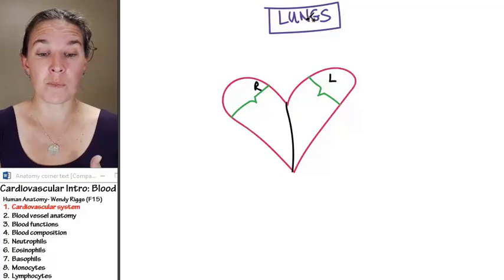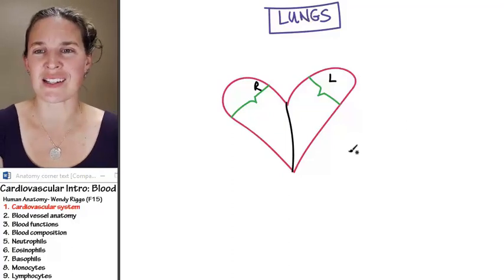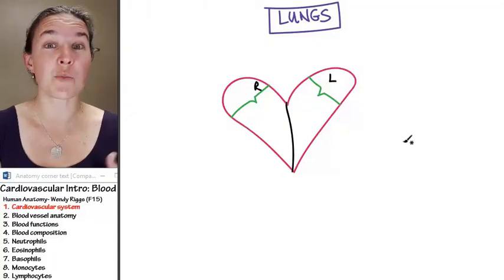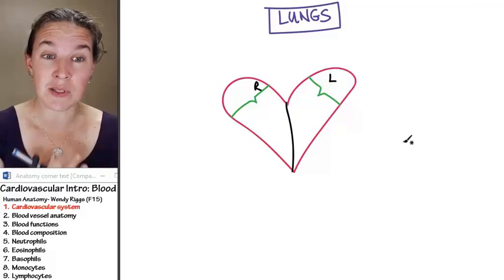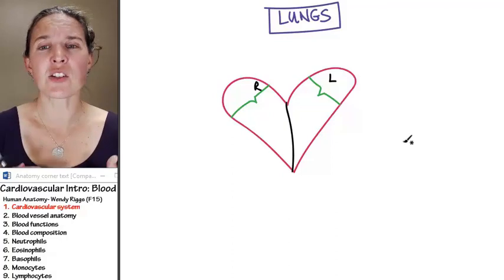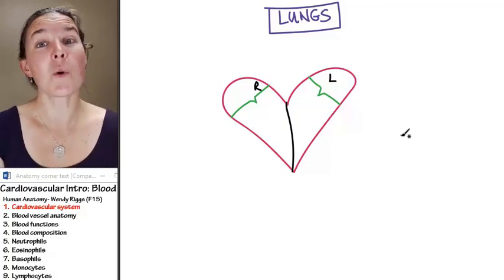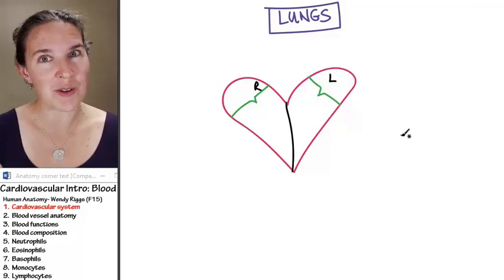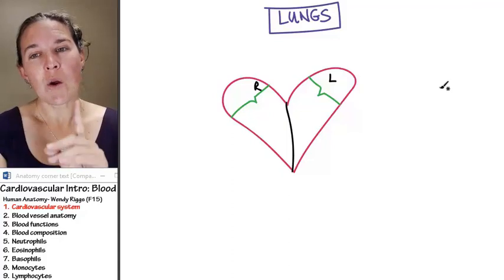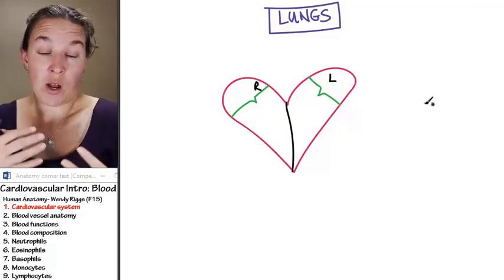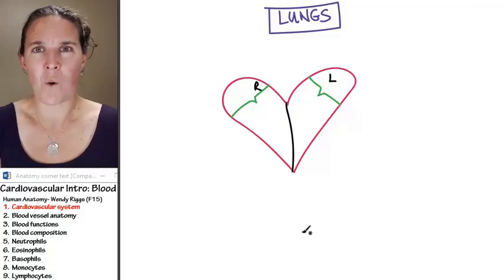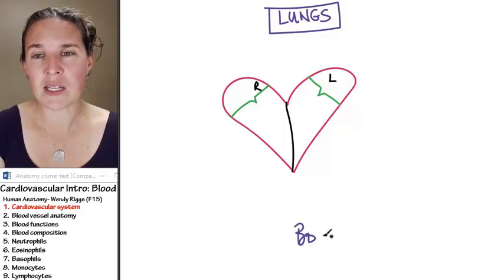And blood before it goes to the lungs is, I think of it as dirty blood because it's full of carbon dioxide which was produced through cellular respiration, metabolism of your cells. One of the byproducts is carbon dioxide. And so, we've got to get rid of that carbon dioxide. We also have to load up on oxygen which is a requirement for cellular metabolism as you all know. So, not only do we have to go to the lungs and load up on oxygen, but we also, our little pathway here, ultimately, why are we loading up on oxygen?